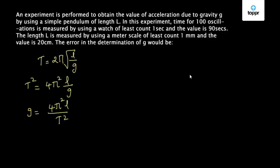Whenever we have a property z that equals a^m times b^n or a^m by b^n, the relative error in z is given as m times Δa by a plus n times Δb by b.